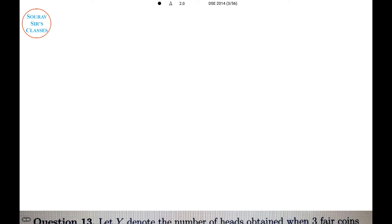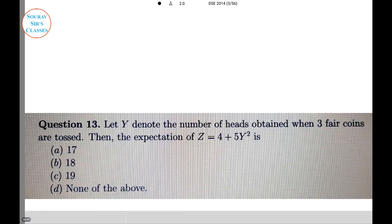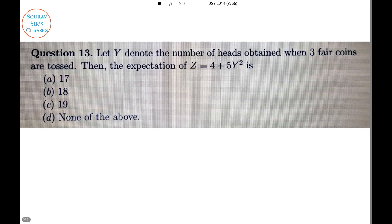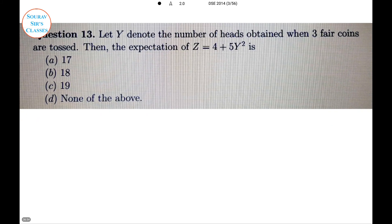Next question: let Y denote the number of heads obtained when three fair coins are tossed. The equation is Z equals 4 plus 5Y squared. We need to find expectation of Z, which is 4 plus 5 times expectation of Y squared. Remember that Y denotes the number of heads obtained when three fair coins are tossed.